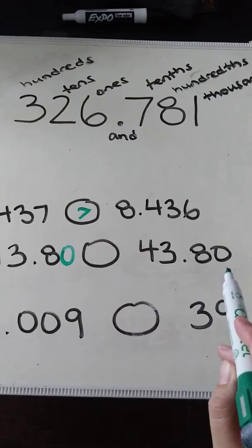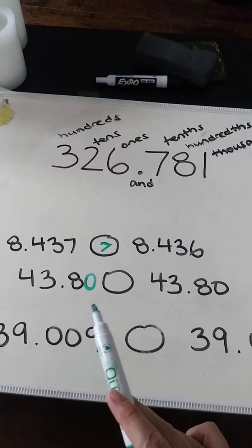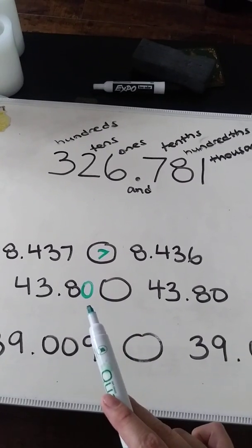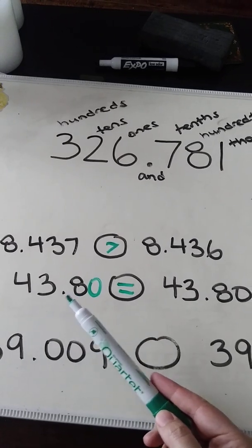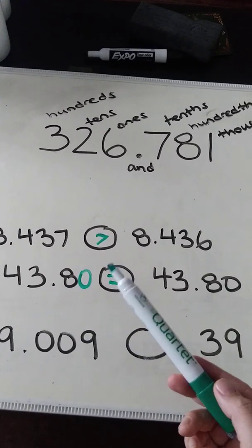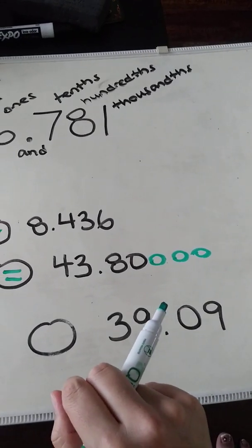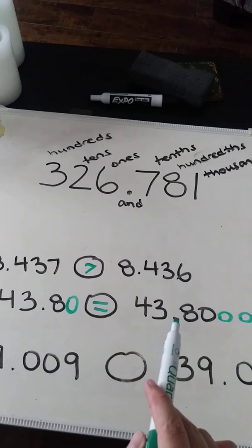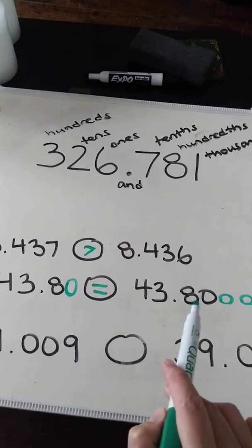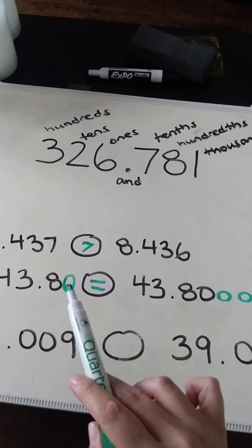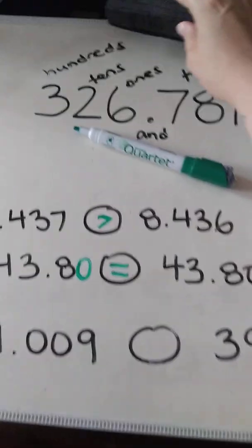If this one has two numbers after the decimal, I also want this one to have two numbers after the decimal — then it's a lot easier to compare. By adding that zero, I've made the numbers exactly the same, so they're actually equal. I could say '43 and 8 tenths' or '43 and 80 hundredths' — it's the exact same number. I can add as many zeros as I want and it will not change the value. You'll see that come up again when you're adding and subtracting decimals as well.